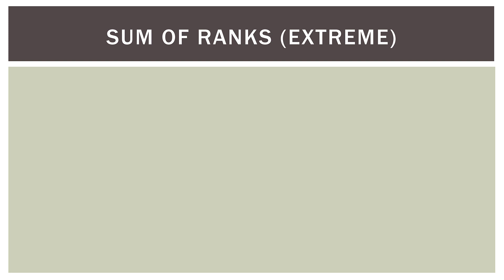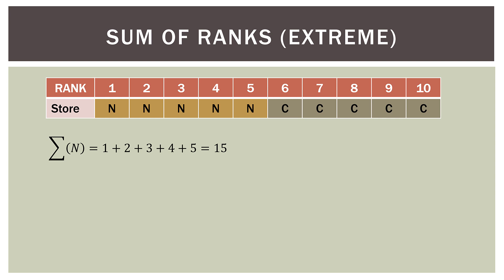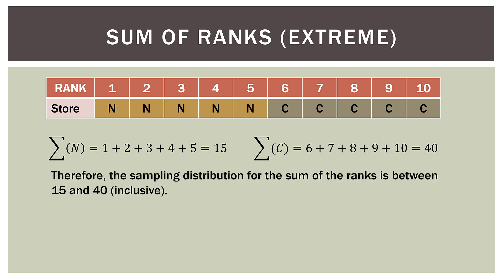Let's take an extreme example. If we put all the scores in order and the first five ranks (one through five) are occupied by the Natterman Point store, and the final five ranks (six through ten) are occupied by the Churchgate store, then we sum the ranks. For Natterman Point: 1+2+3+4+5 = 15. For Churchgate: 6+7+8+9+10 = 40. So the sampling distribution for the sum of the ranks ranges between 15 and 40.